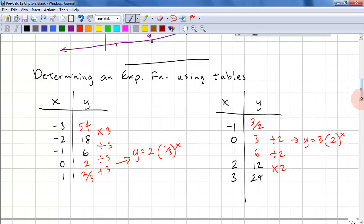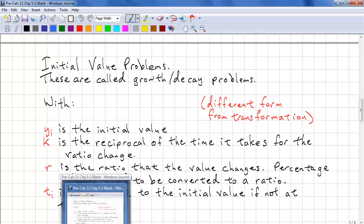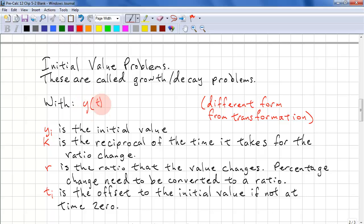Now let's look at some harder problems for some students, and that's word problems. These are called initial value problems or they're also called growth and decay problems. So we use the formula: y of t equals yi times r to the power of k times t minus ti in brackets. And this is a different form from the transformations. yi is called the initial value if ti equals 0. Otherwise, it is called the specified value.